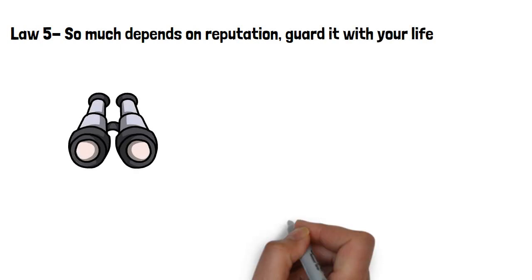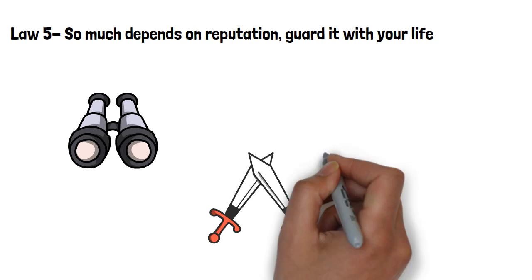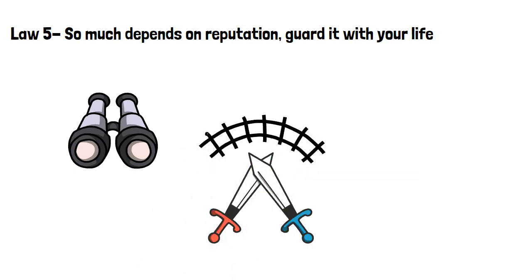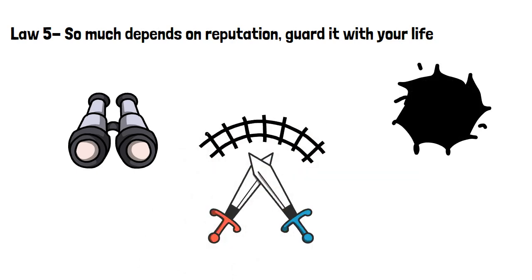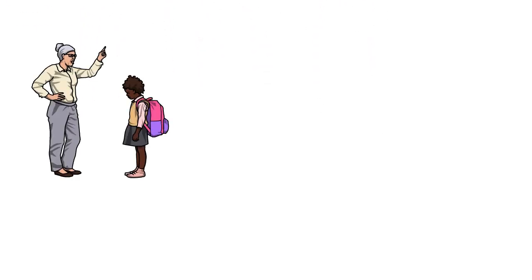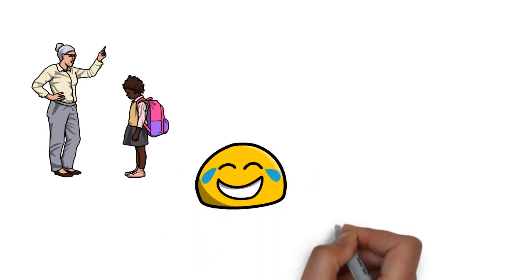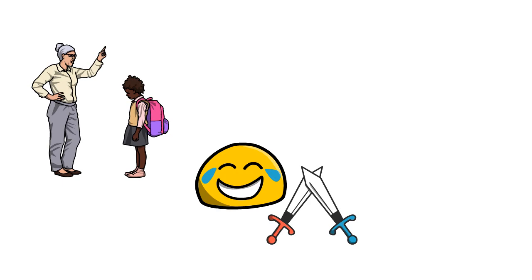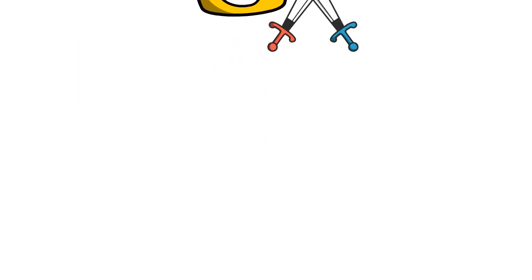Law 5, so much depends on reputation. Guard it with your life. Always be on the lookout for potential attacks and stop them in their tracks. In the meantime, learn to crush your enemies by opening holes in their own reputations. Then, step aside and let public opinion finish them. And once you attack them by instigating rumors, your enemies are in trouble. Ridiculing your opponents is a double-edged sword. It puts them on the defensive and brings more attention to you, thereby enhancing your own reputation.